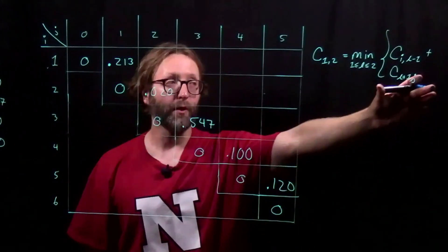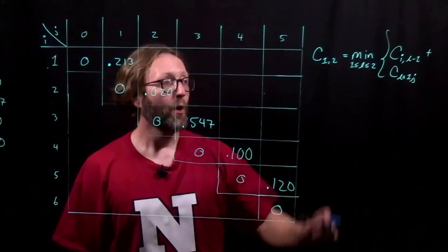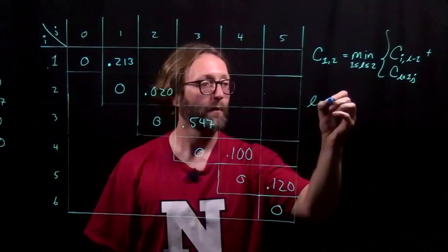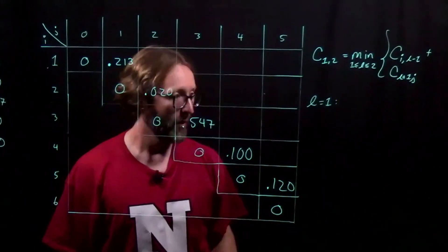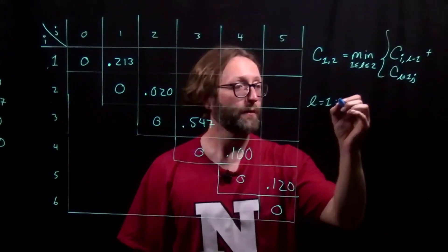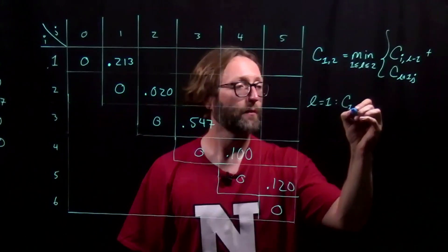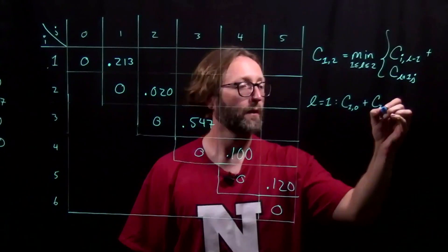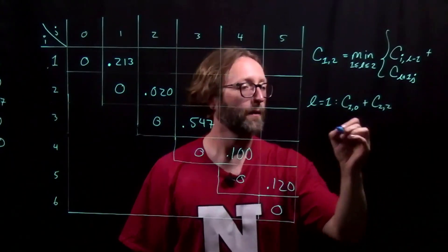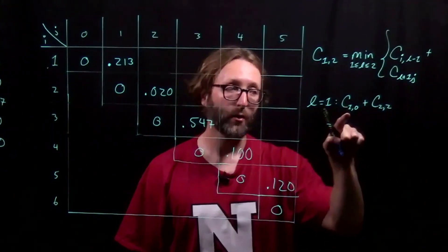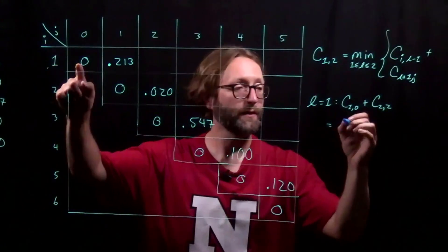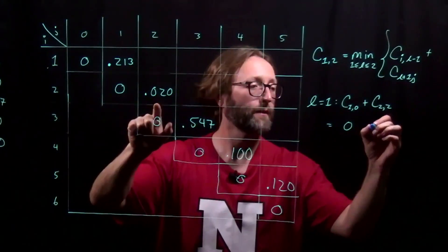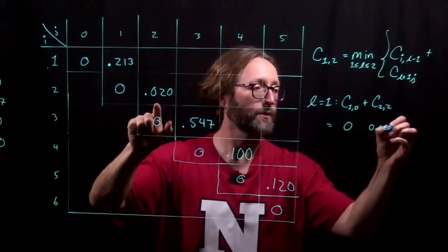Remember our general formula over here. We only have two possible values of L to check here. When L is 1, these values become 1 minus 0 is 0. And now it just becomes a lookup. 1, 0 is, of course, 0. And 2, 2 is 0.02.